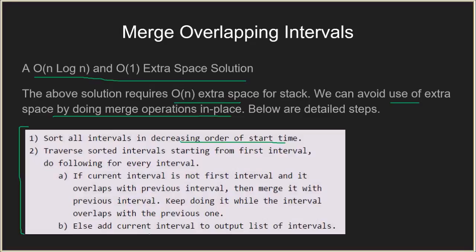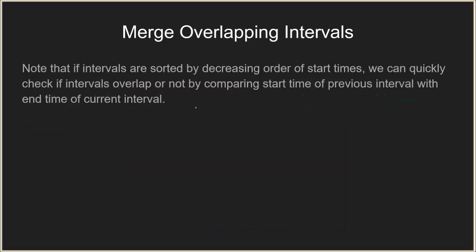Once backtracking is done, we add the current interval to the output list. Note that because intervals are sorted by start time, we can quickly check overlap by comparing the start time of one interval with the end time of the other.